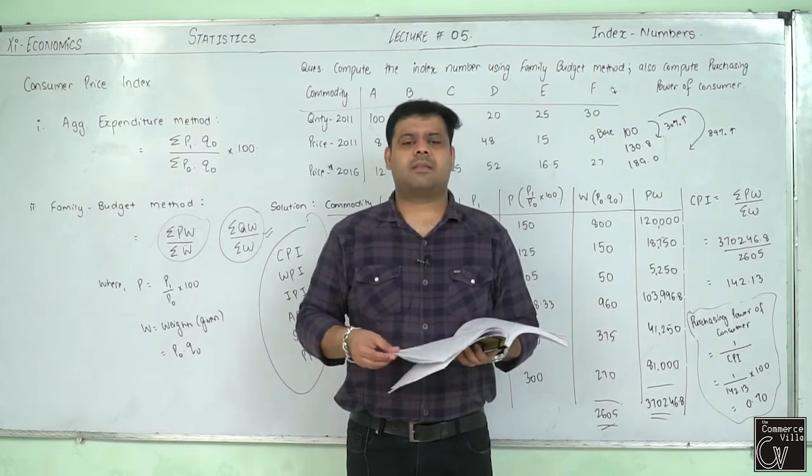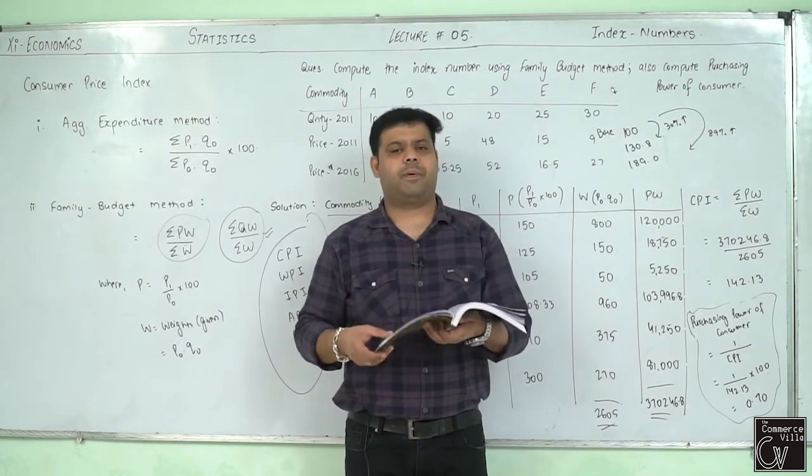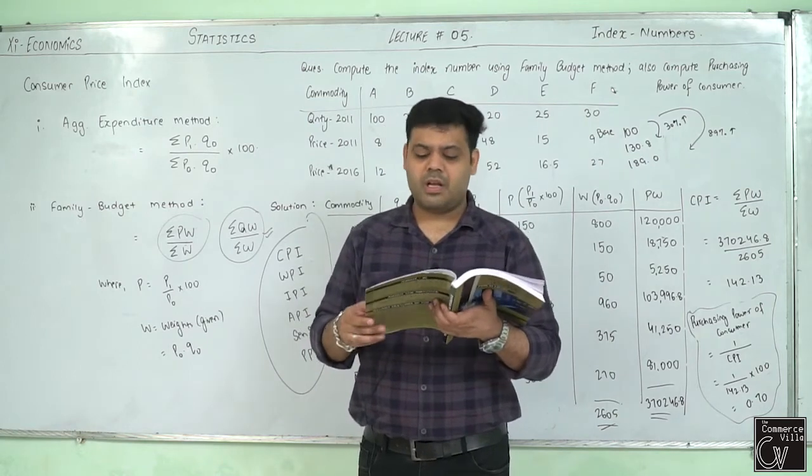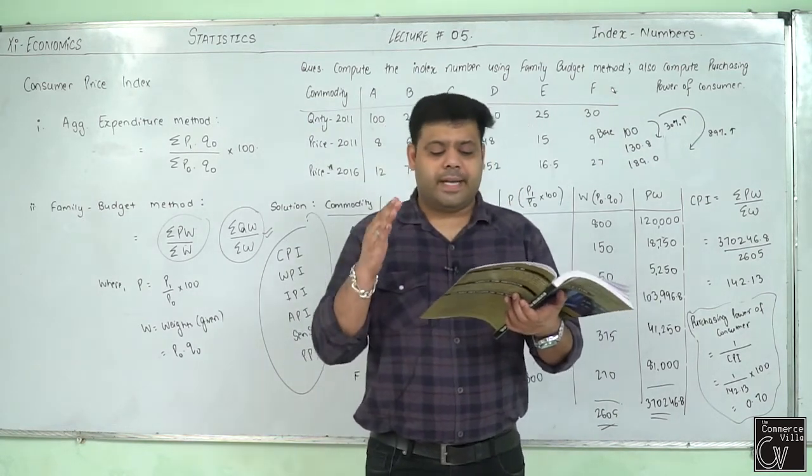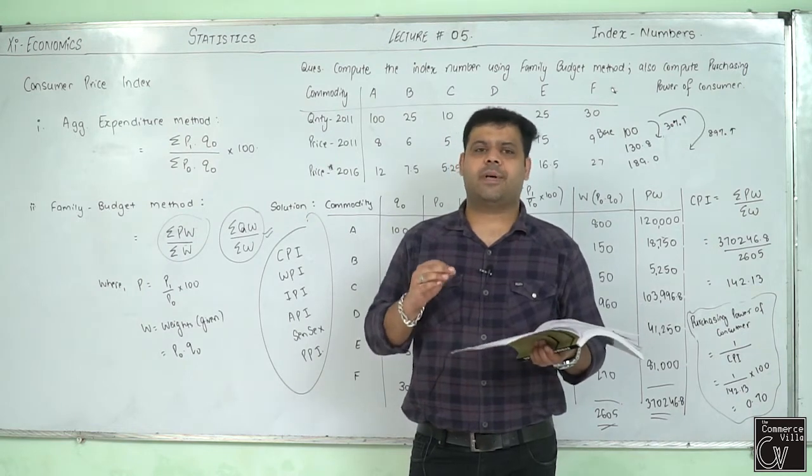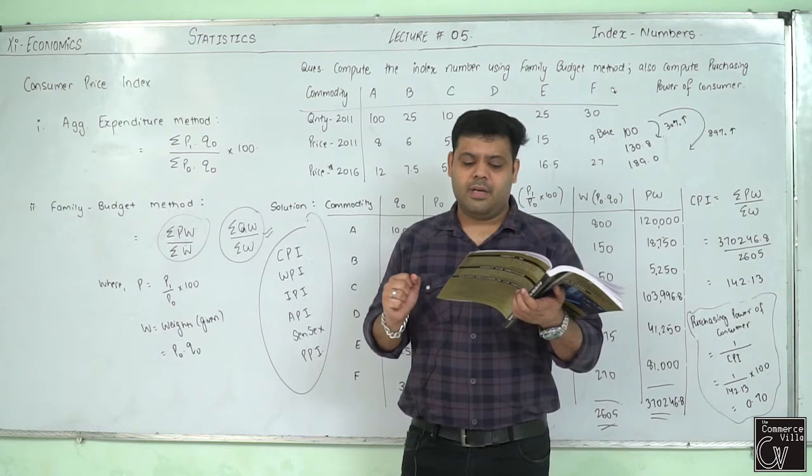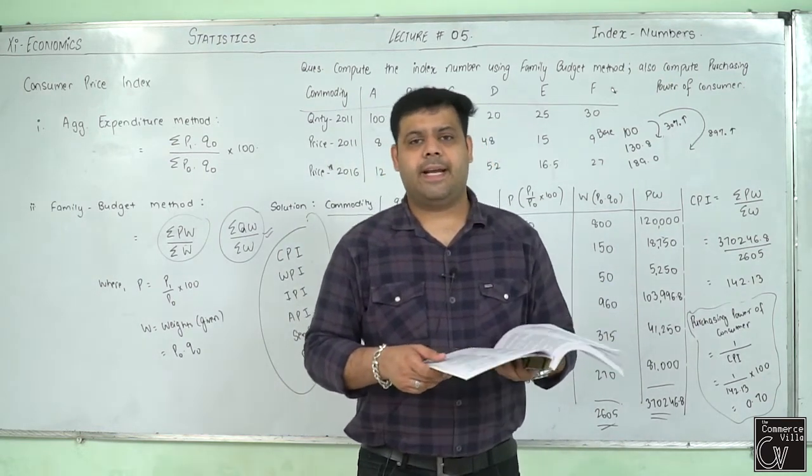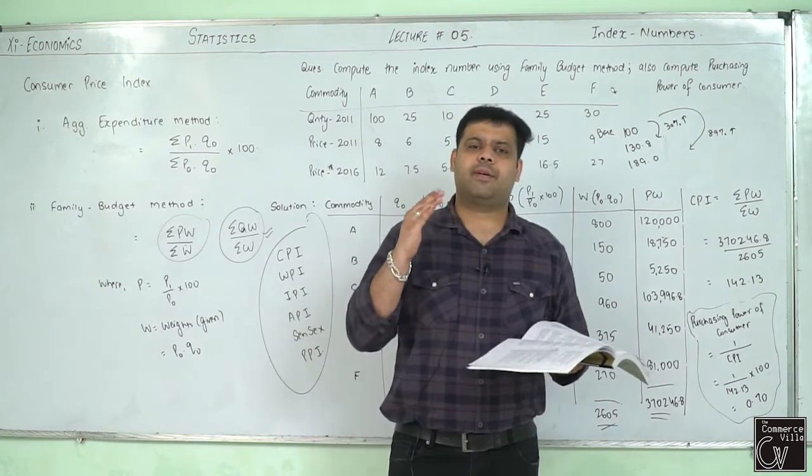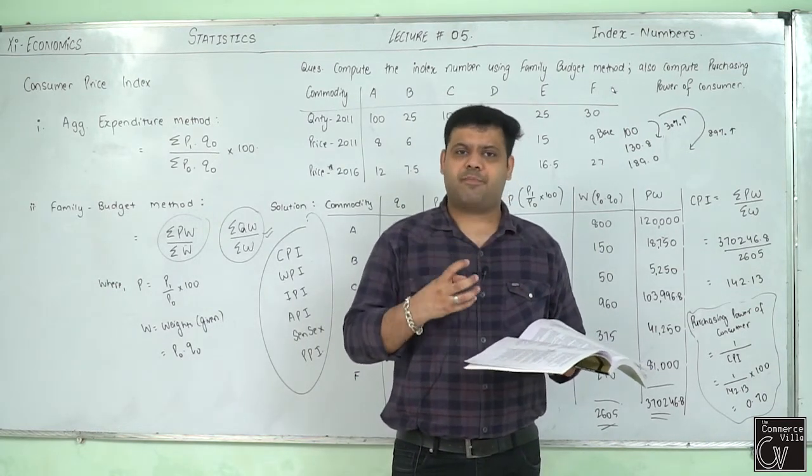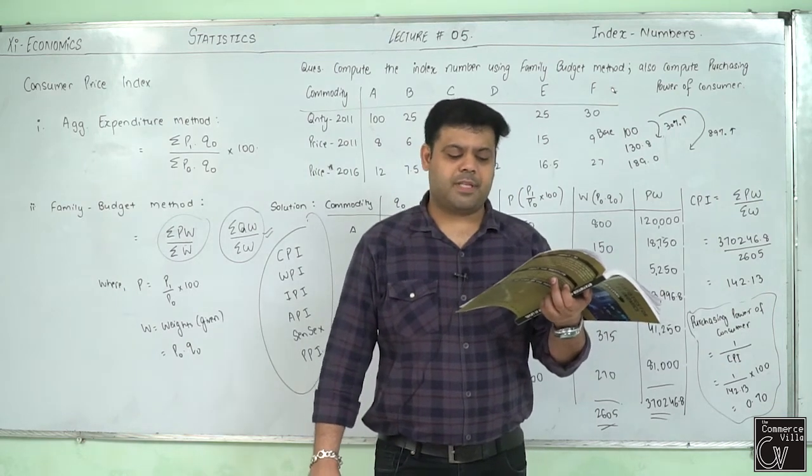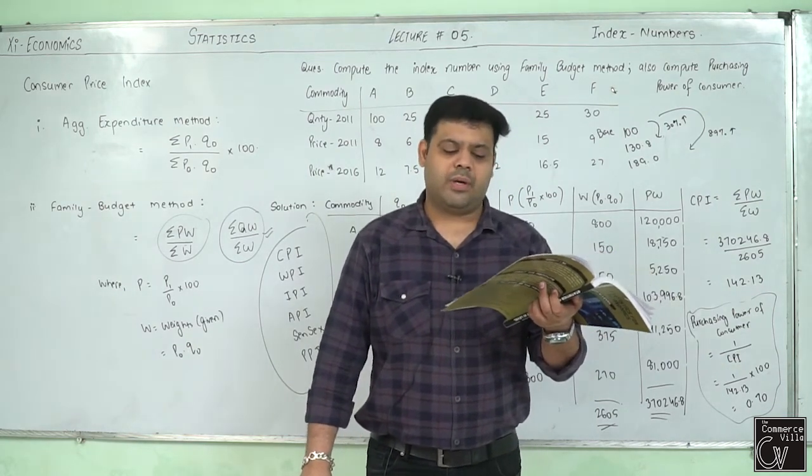What are the limitations? What are the limitations of index numbers? Please open page 217. Question 47. Index numbers are constructed with certain specific objectives. So their use is limited. Index number's use is limited. In the context of this statement, discuss any four limitations of index number. Number one: limited applicability. Every person cannot use index numbers. Only professionals can use it. Each and every index number is constructed for a specific purpose. If it is used for some other purpose, then it might give misleading results. So index number has limited applicability.